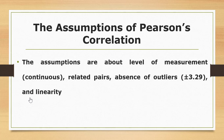The assumptions of Pearson's correlation are mainly about level of measurement — we should have continuous measurement, which can be interval or ratio. Examples of continuous variables include weight in kilograms, length, or grades from 1 to 100.